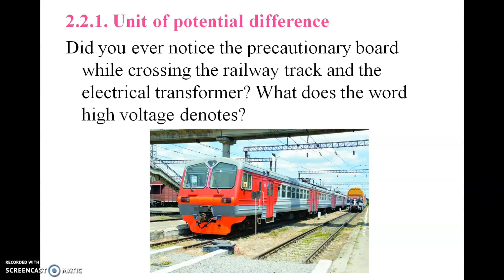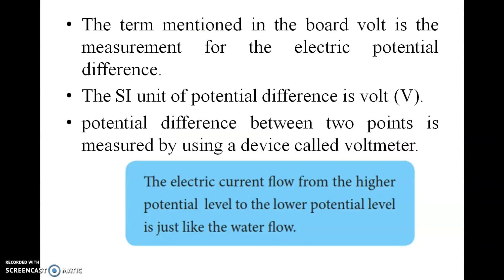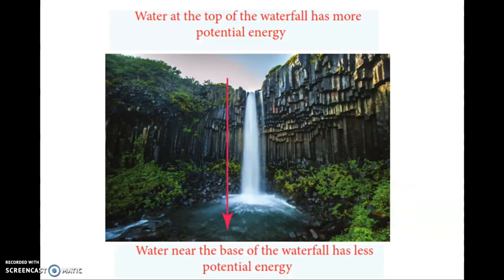Have you noticed the precaution board while crossing a railway track near an electric transformer? The term 'high voltage' denotes electric potential difference. The SI unit of potential difference is the volt (V). Potential difference between two points is measured using a device called a voltmeter.